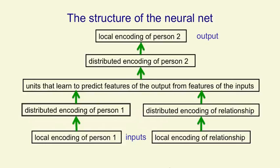But now, in the next layer of the network, we've taken the local encoding of Person 1 and connected it to a small set of neurons — I actually used six neurons for this. And because there are 24 people, it can't possibly dedicate one neuron to each person; it has to re-represent the people as patterns of activity over those six neurons. What we're hoping is that when it learns these propositions, the way in which it encodes a person in that distributed pattern of activity will reveal structure in the task or domain. So we train it on 112 of these propositions many times, slowly changing the weights using backpropagation. After training, we look at the six units in the distributed encoding layer to see what they're doing.